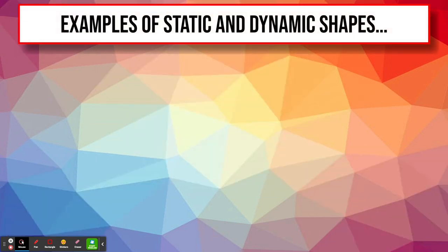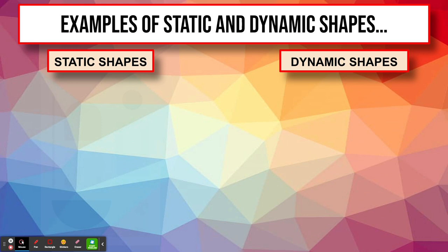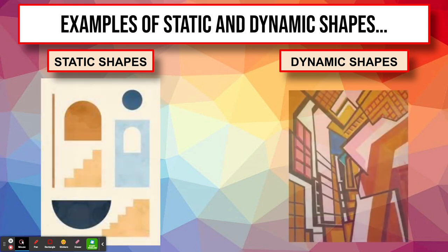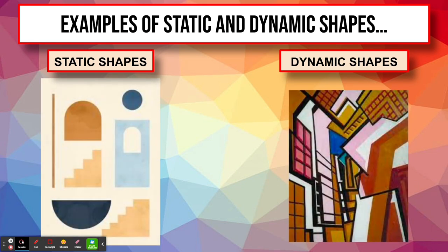Here are some more examples of static and dynamic shapes. Static shapes are just kind of sitting there, but now because these shapes have a lot of angles on them, they appear to be sort of moving — so you would say that they're more dynamic.